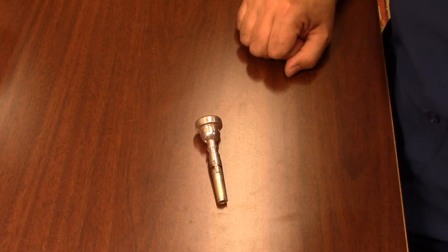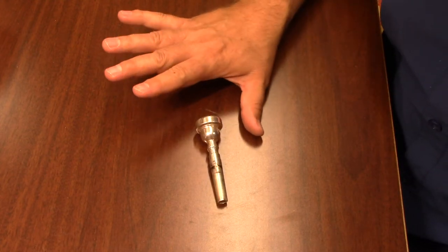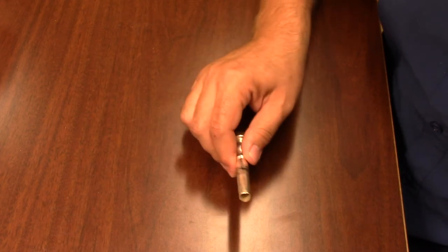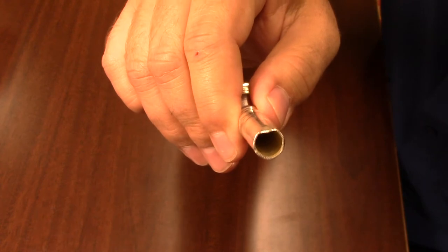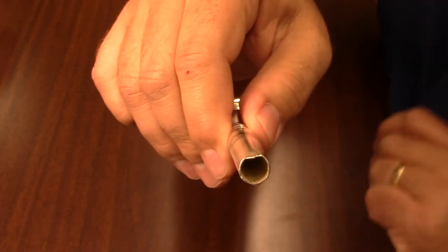A common issue that you'll encounter with brass mouthpieces happens when mouthpieces are dropped. The shank can become bumped and made square, as you can notice there's a flattened spot.